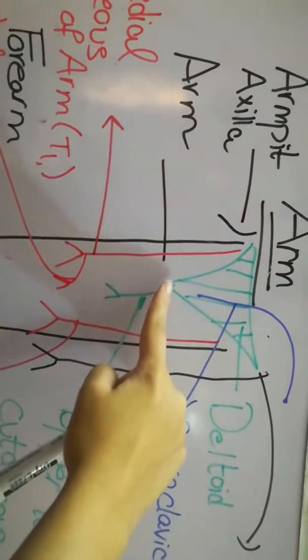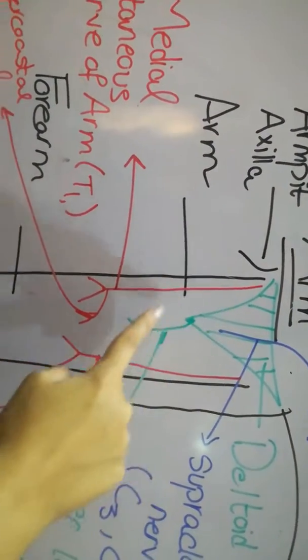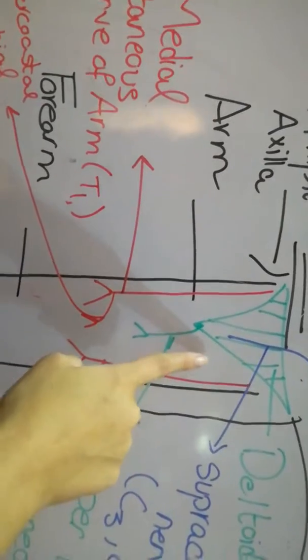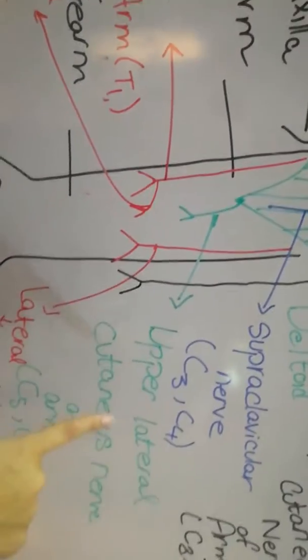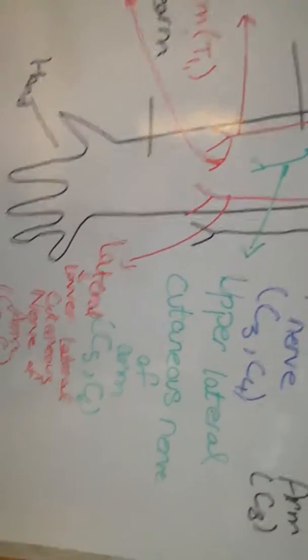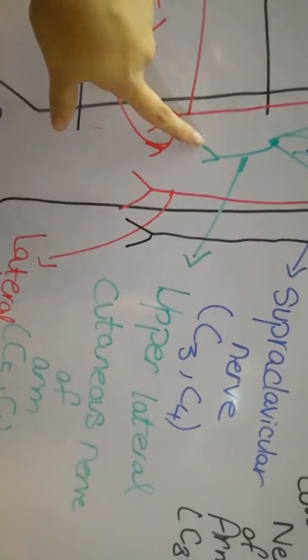Then, on the lower half of the deltoid muscle, the nerve which is supplying that region is a branch of your axillary nerve known as the upper lateral cutaneous nerve of the arm having the nerve roots C5 and C6.